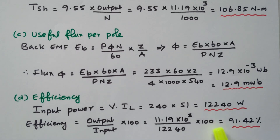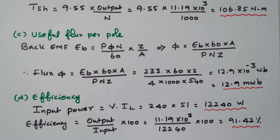This problem is based on the shunt motor. From the given data we calculated the torque developed in the armature (total torque), the torque available at the shaft (useful torque), the useful flux per pole, and finally the efficiency of the shunt motor. Subscribe the channel for more videos. The soft copy of this material is available in the drive; the link is in the description box. Thank you for listening.